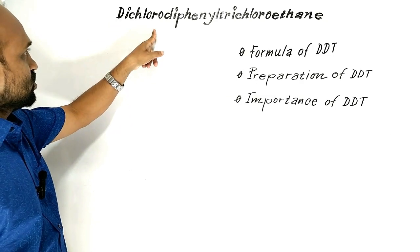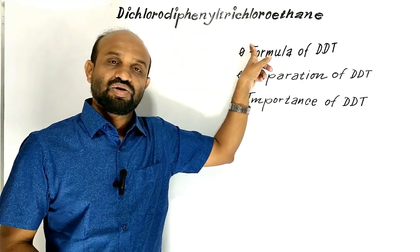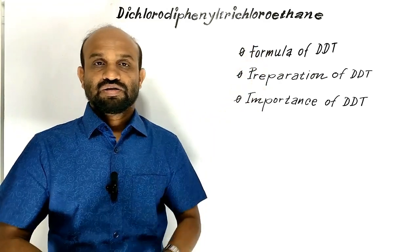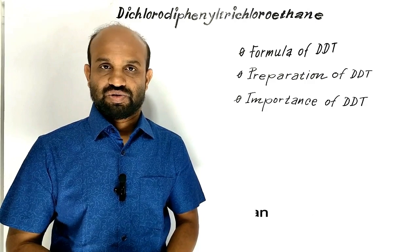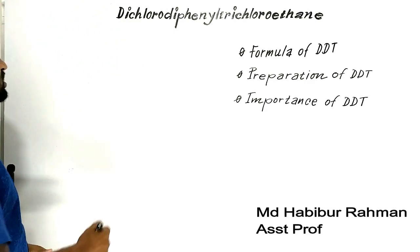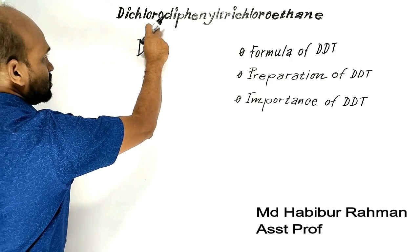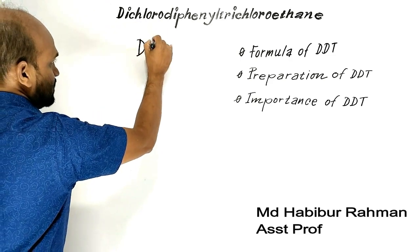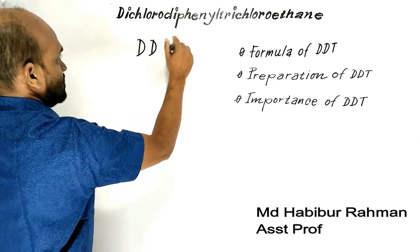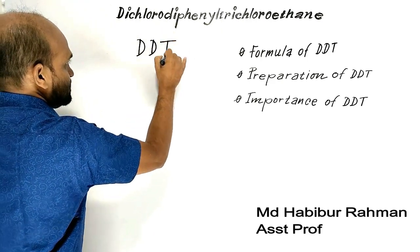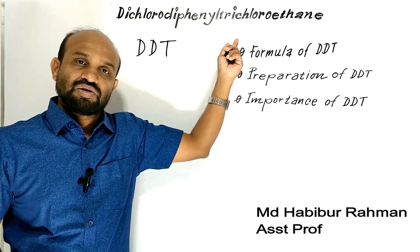Dichloro, diphenyl, trichloroethane — a single word. Let's see what the abbreviation of this word is. D from dichloro, another D from diphenyl, and T from trichloroethane.